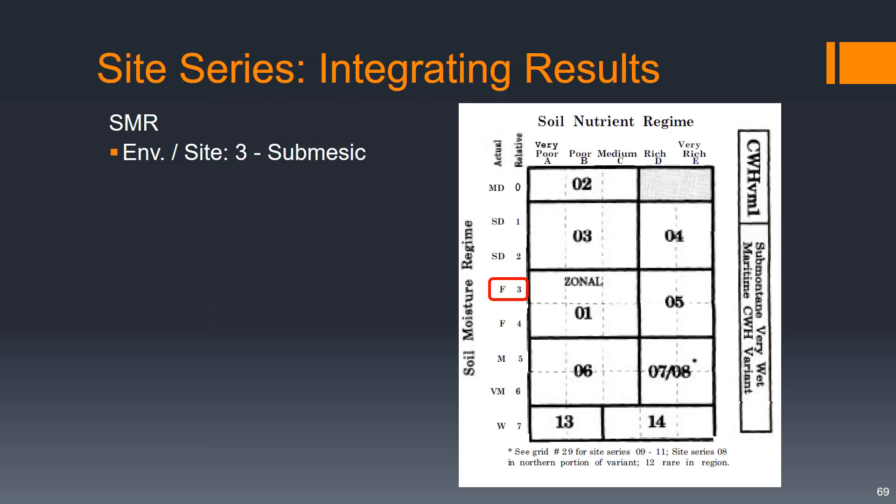For our soil moisture regime, from our environmental analysis we got a relative SMR of 3, or submesic. From our plant indicator species groups we got a relative SMR of 5, or subhygric, or the absolute SMR of moist.